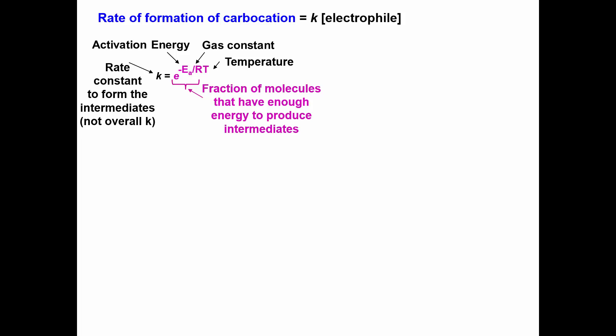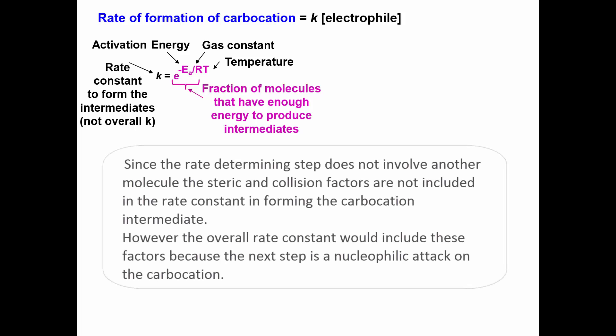The rate constant will equal the fraction of molecules that have enough energy to produce the carbocation. Since the rate determining step does not involve an attack of a nucleophile on the electrophile and only one molecule is involved, the steric and collision factors are not included in the rate constant.